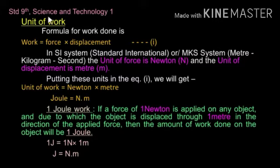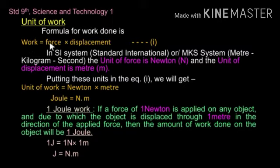Standard 9th Science and Technology, Part 1, Chapter Number 2: Work and Energy. In this chapter, we are going to study about the unit of work. The formula for work done is: Work is equal to force into displacement. This is considered as equation number 1.